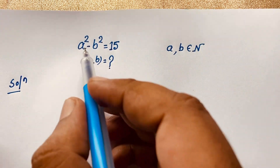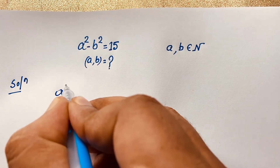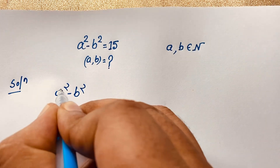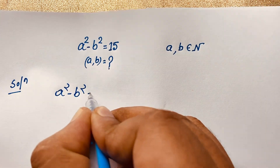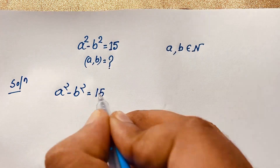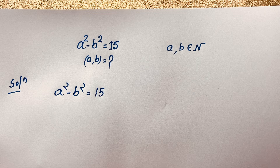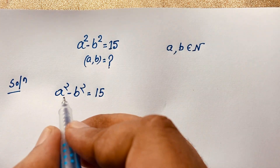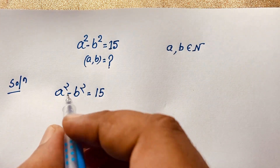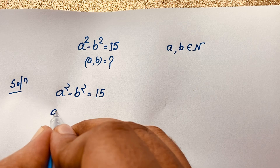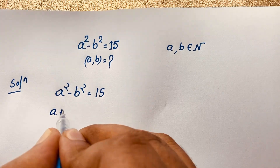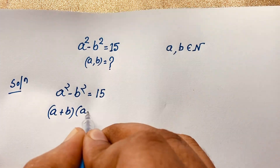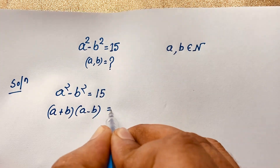Our question is a² - b² = 15. Now according to the difference of squares identity, we know that a² - b² equals (a + b)(a - b), and that product equals 15.